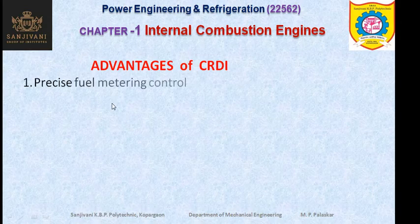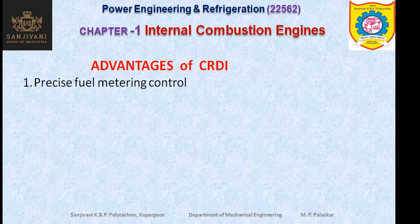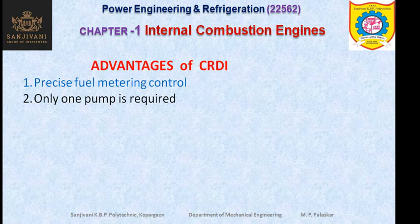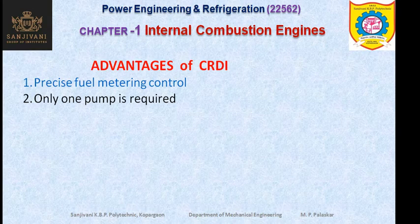The advantages of CRDI — the Common Rail Direct Injection system — are: first, precise fuel metering and control. The fuel is metered precisely and the spray or injection of fuel is controlled precisely by the CRDI system. We are using only one pump for increasing the pressure of the fuel. Even if the engine has more than one cylinder — for example, a four-cylinder engine with four injectors — the fuel pump is a single pump, with additionally a lift pump for lifting the fuel from the tank to the main pump.